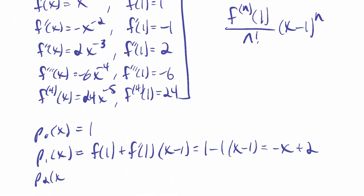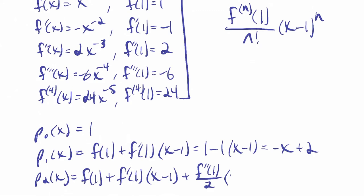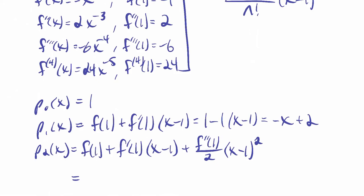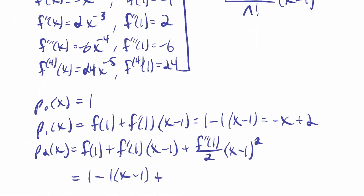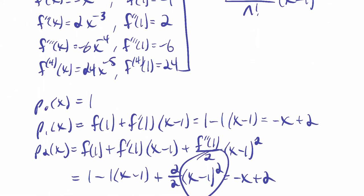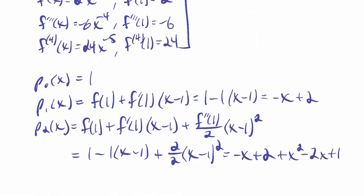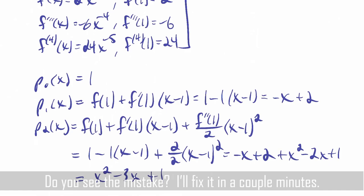The next polynomial, p2, is f of 1 plus f prime of 1 times (x minus 1) plus f double prime of 1 over 2 times (x minus 1) squared. That's 1 minus (x minus 1) plus (2 over 2) times (x minus 1) squared. Since 2 over 2 is 1, and foiling out gives x squared minus 2x plus 1, combining like terms gives x squared minus 3x plus 3.